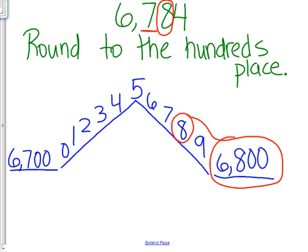And it's going to land at 6,800. So 6,784 rounds to the hundreds place to 6,800.